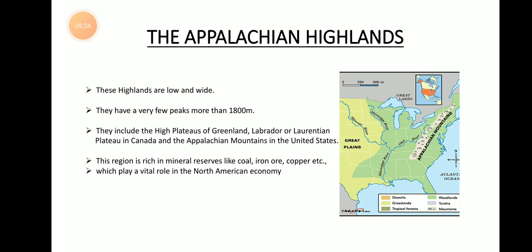The third land system is the Appalachian Highlands. These highlands are low and wide — there is a difference between mountains and highlands. Mountains are very high in nature, but highlands are a little bit lower. The topmost height of the highland is not more than 1,800 meters, so they are shorter in appearance.